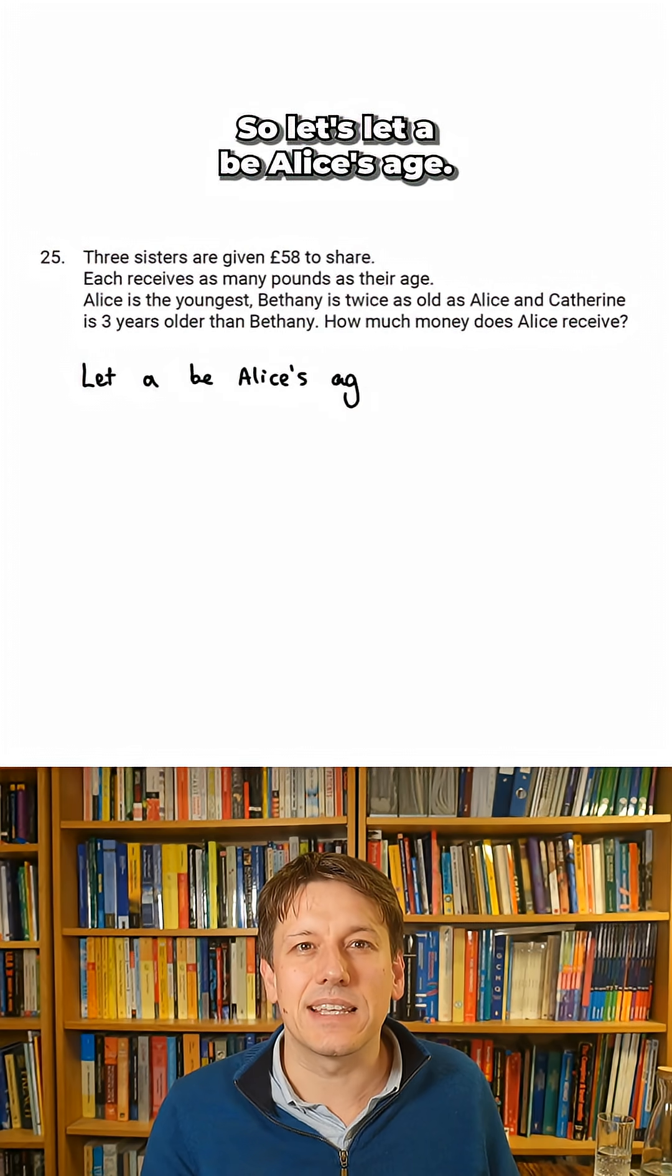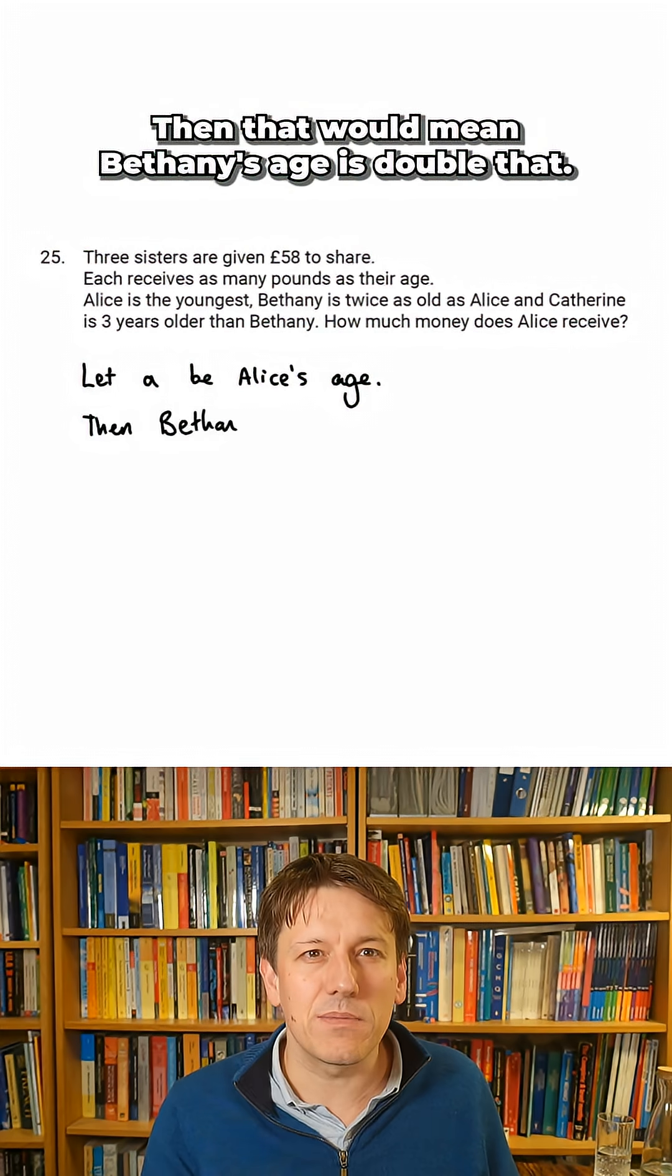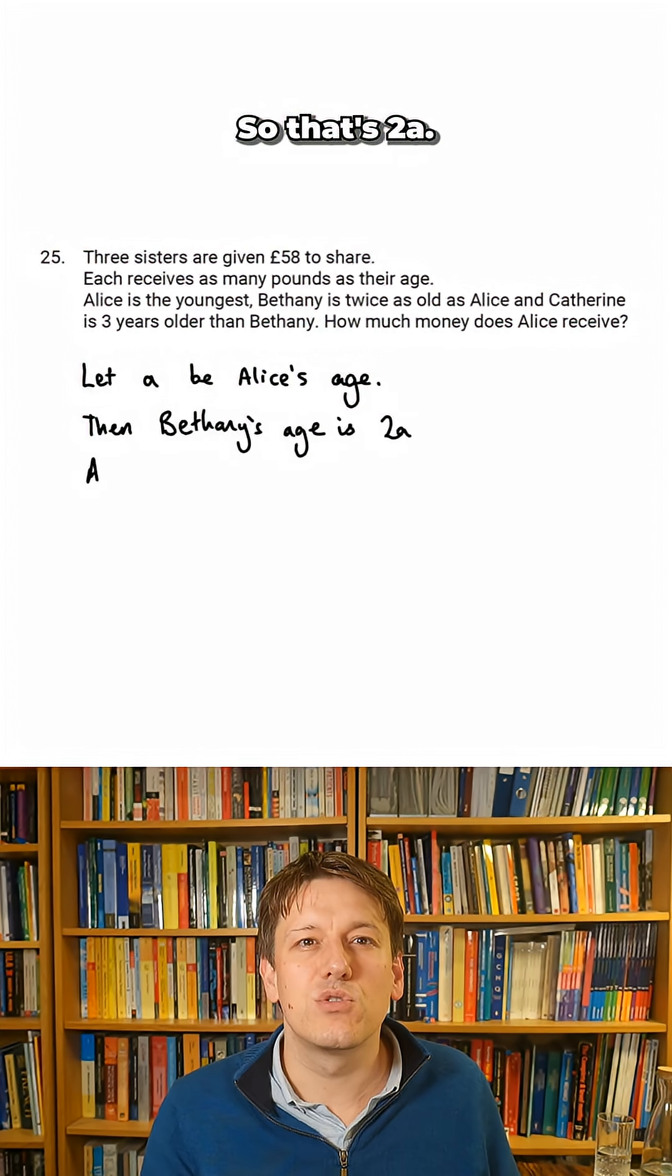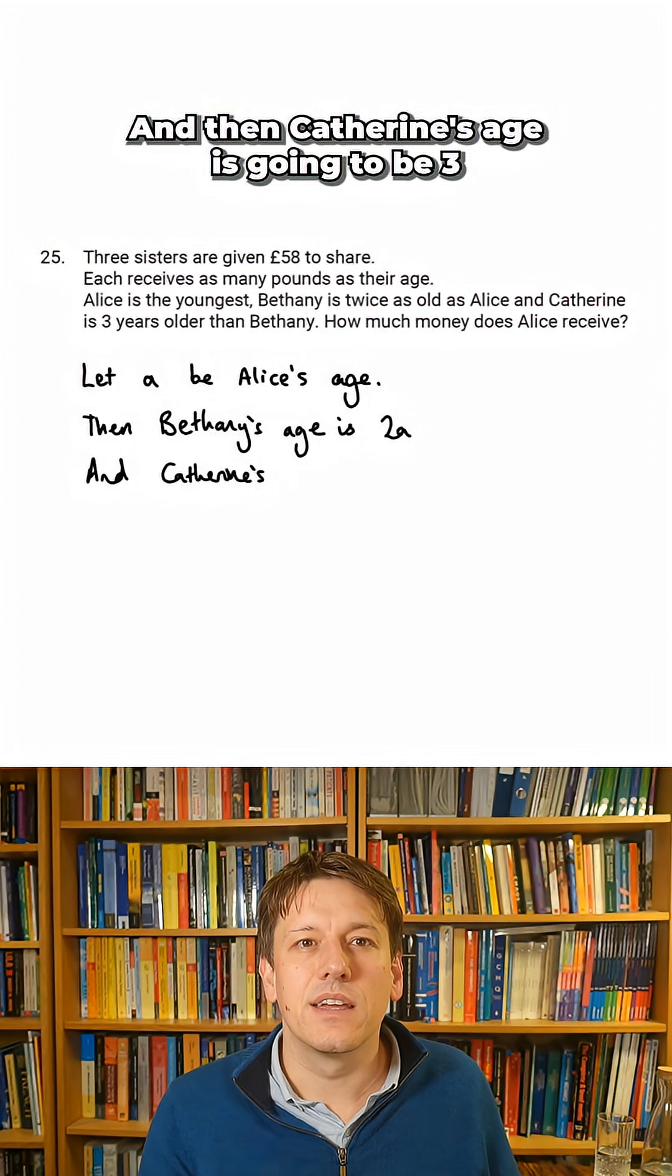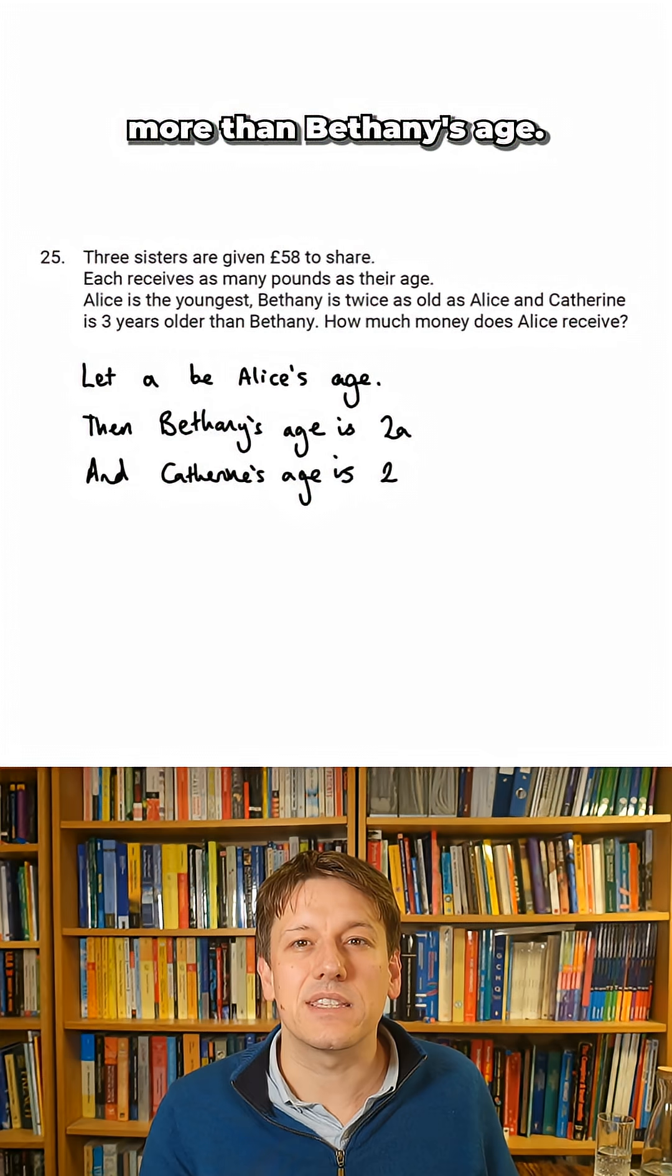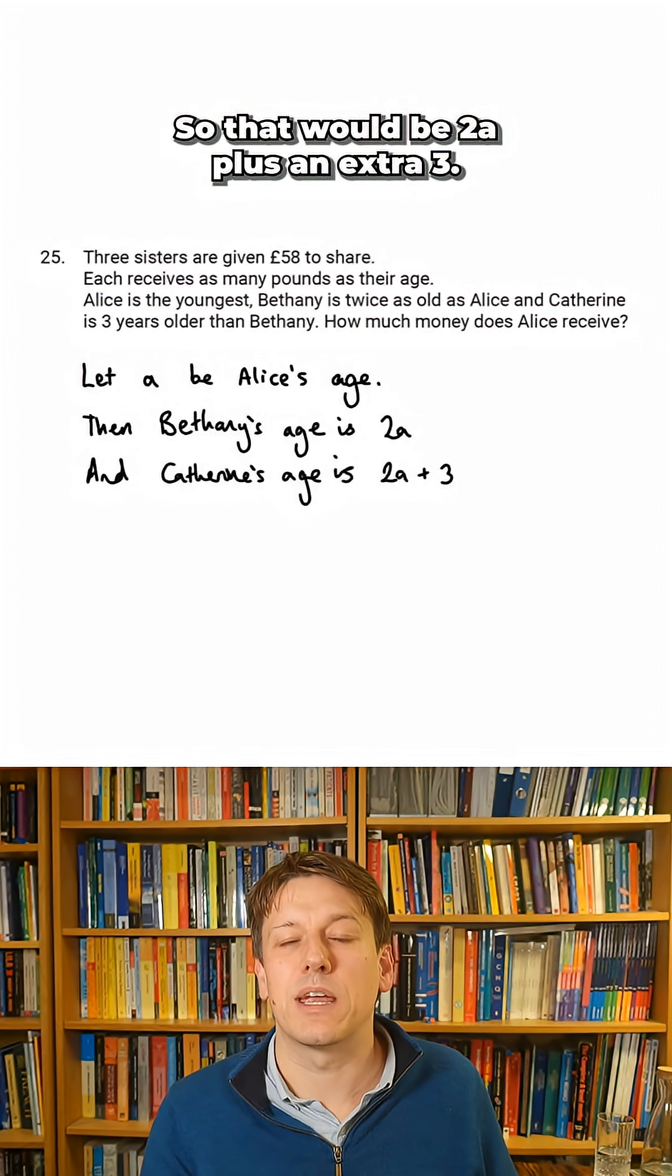So let's let A be Alice's age. Then that would mean Bethany's age is double that, so that's 2A. And then Catherine's age is going to be three more than Bethany's age, so that would be 2A plus an extra three.